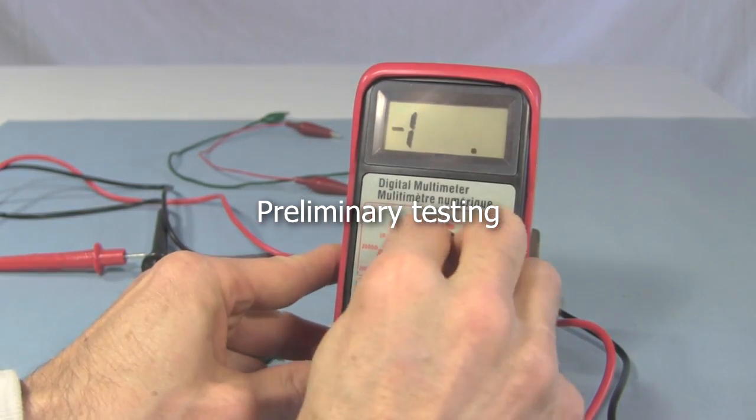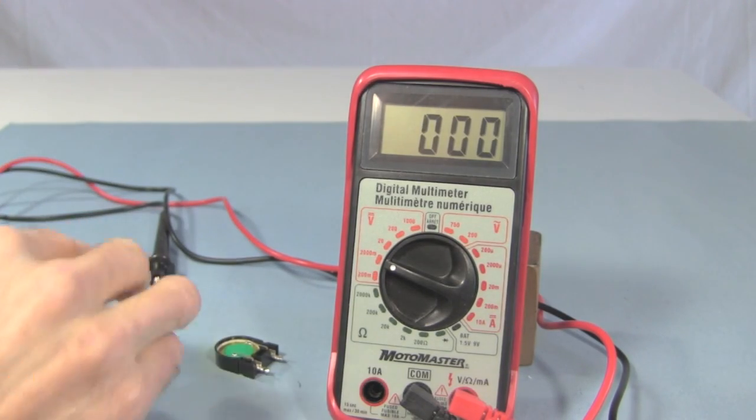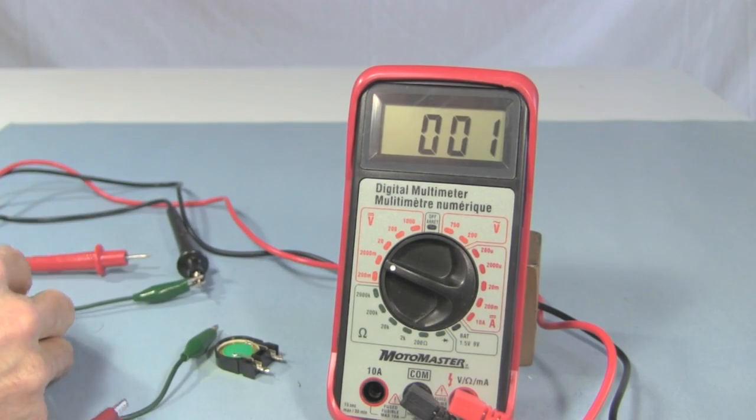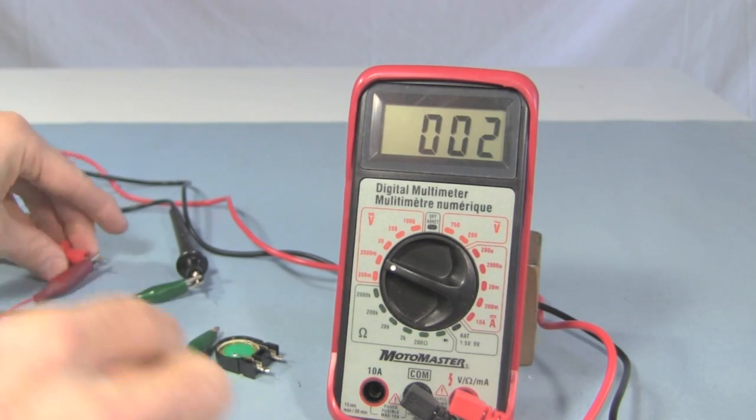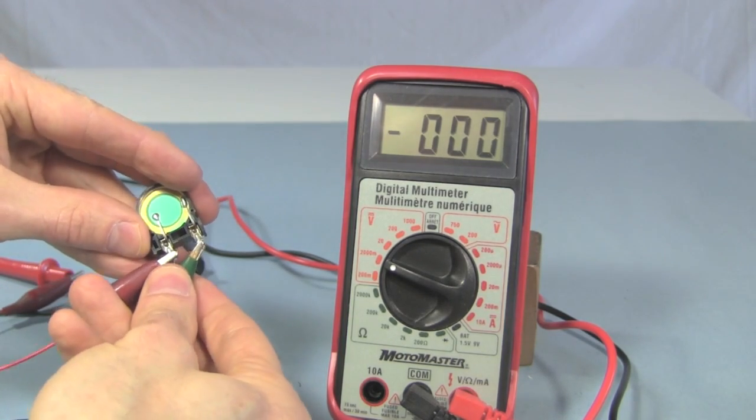Okay, so I got my voltmeter. I'll put it on the 2,000 millivolts scale, so basically 2 volts. I'll hook up one end of the alligator clip to one of the meter probes, the other alligator clip to the other meter probe, and then I'll connect them to the crystal. It doesn't matter which way you connect things in this case.